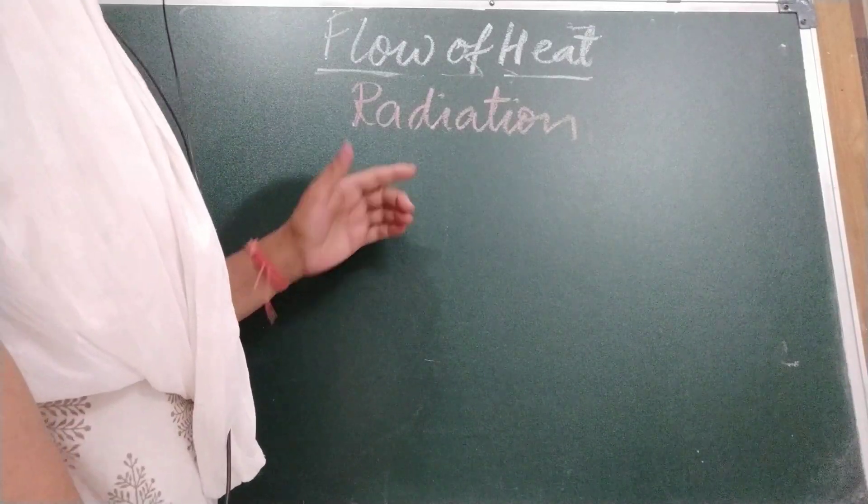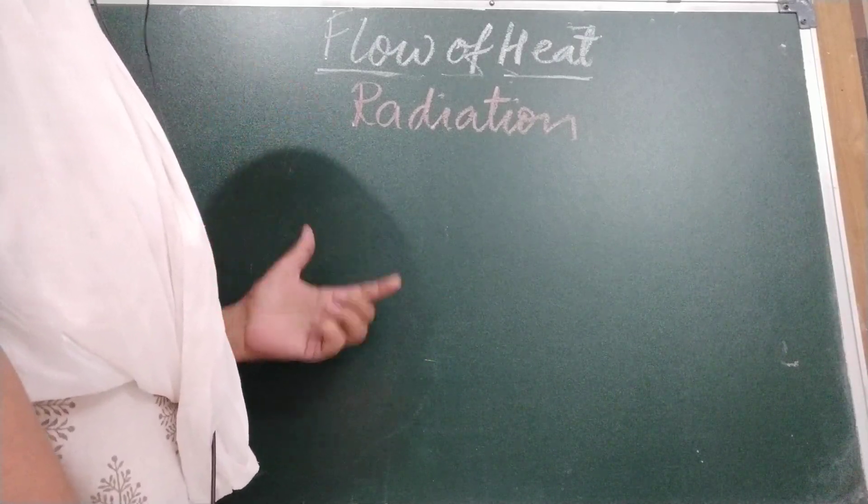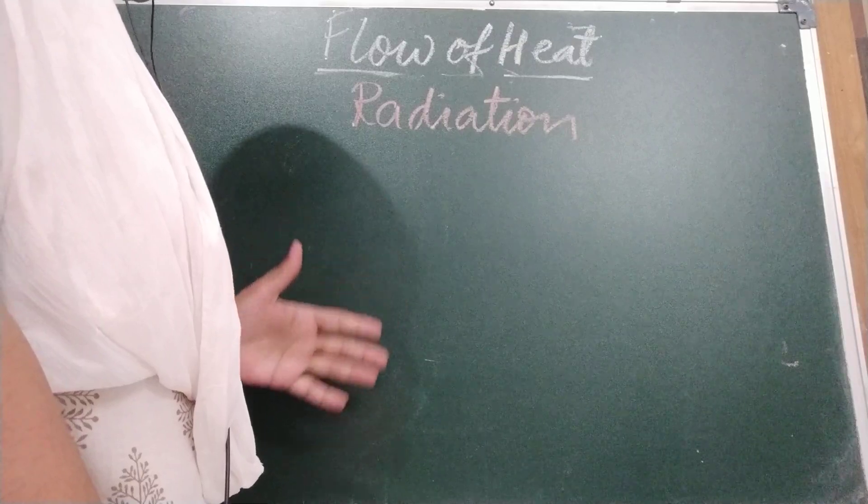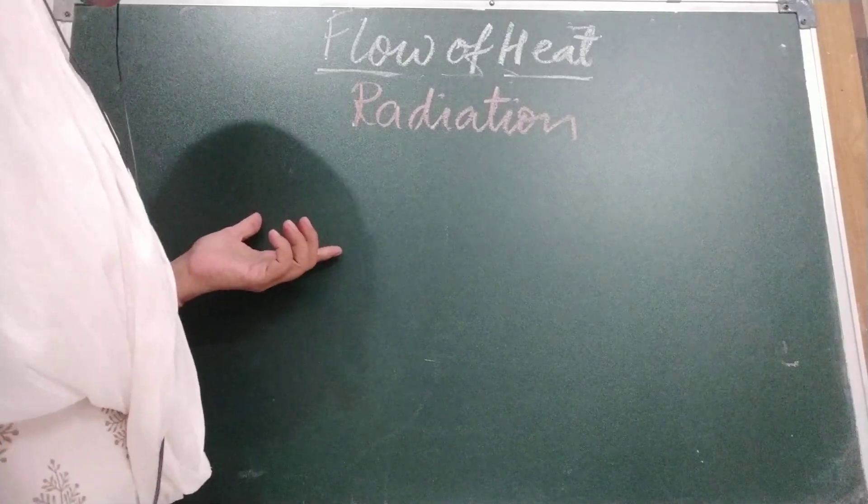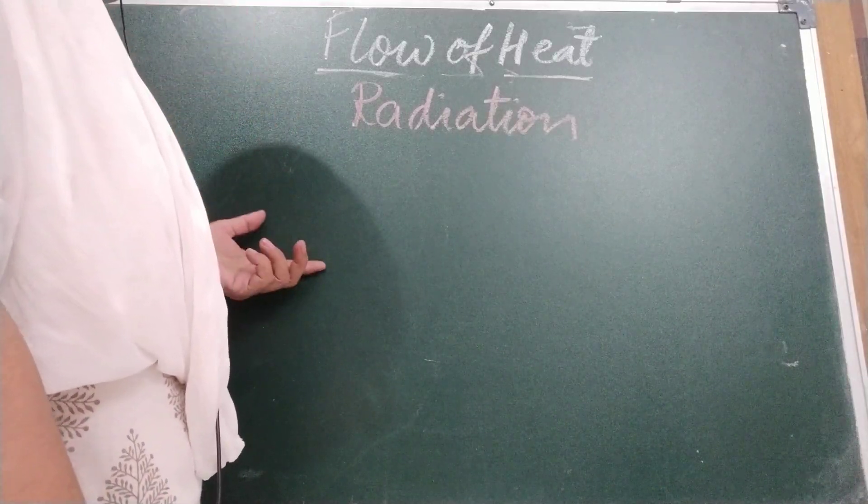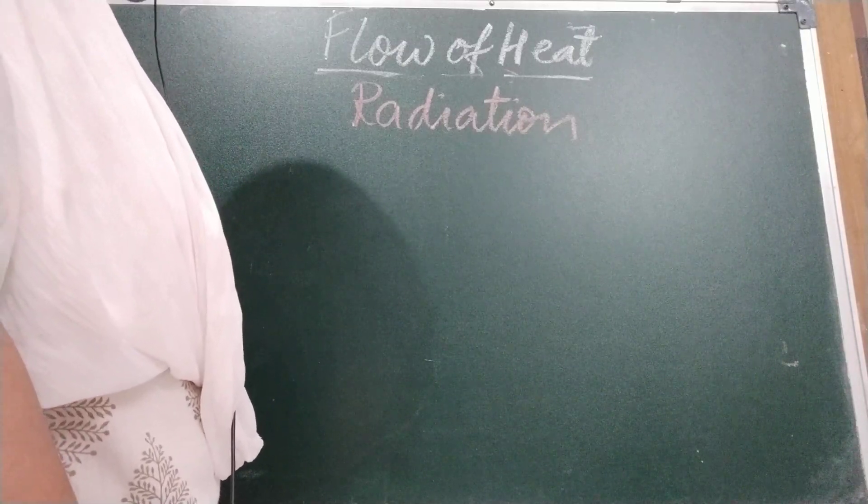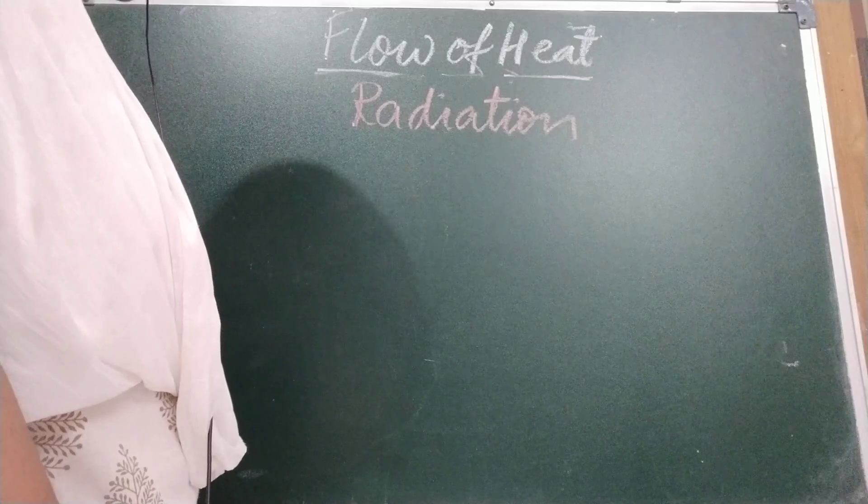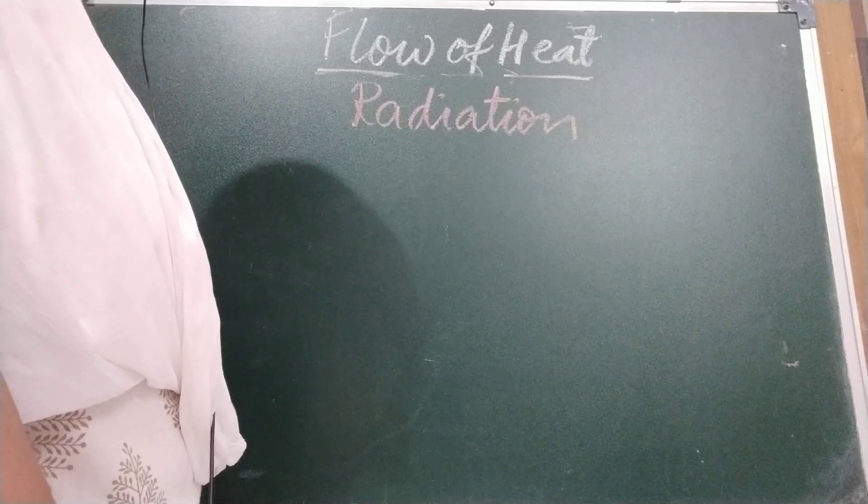But in this case it doesn't require any medium. Radiation can take place whether a medium is present or not. If medium is not there then also it will take place. Medium is there then it also takes place. The heat from the sun reaches to us through millions of miles of empty spaces by radiation only. All objects around us radiate heat to the surrounding. For example, our body radiates heat to the surroundings and receives heat from it by radiation. The higher the temperature of the object, the more is the heat radiated by it.